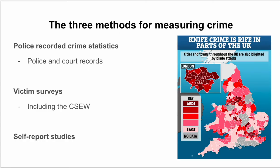There are three main methods for measuring crime: police recorded statistics (police and court records), victim surveys including the CSEW, and self-report studies. In England, police recorded statistics and the CSEW are classed as official statistics, so if you had a question on official statistics you could talk about both of those, as they are produced by the government.